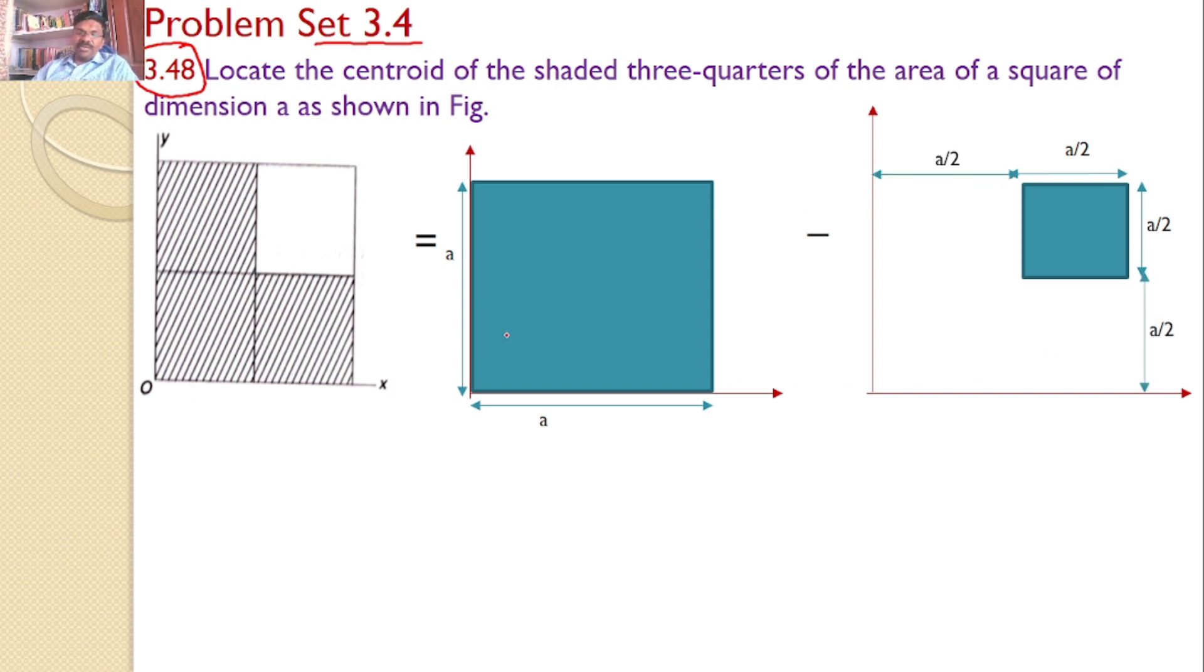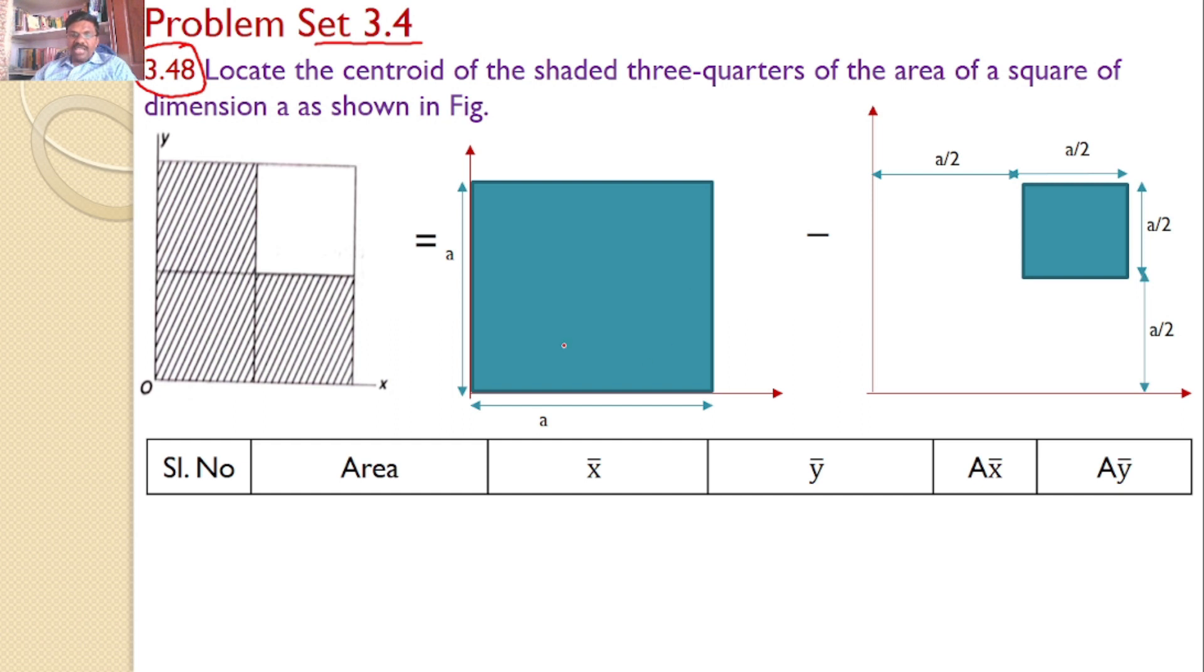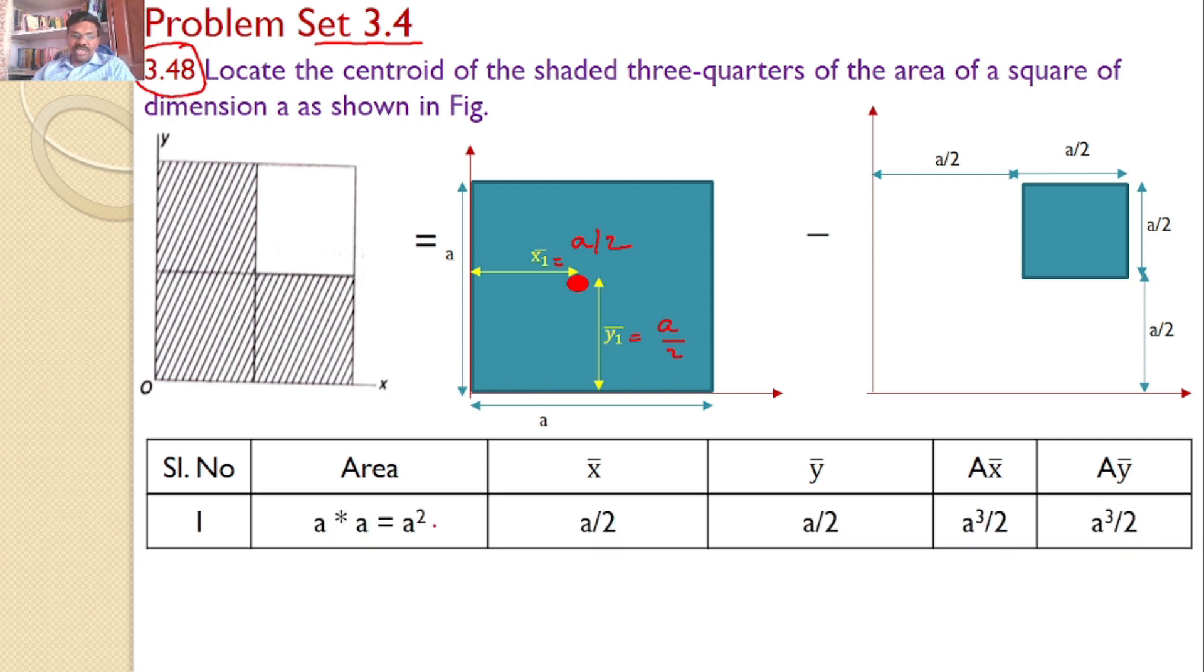The centroid for area 1 is centroid Y1 bar and X1 bar. We can see X1 bar equals A by 2, and Y1 bar equals A by 2. What is the area? A by A, that is A squared. So the area is A squared, X bar is A by 2, Y bar is A by 2. I can calculate A into X bar.